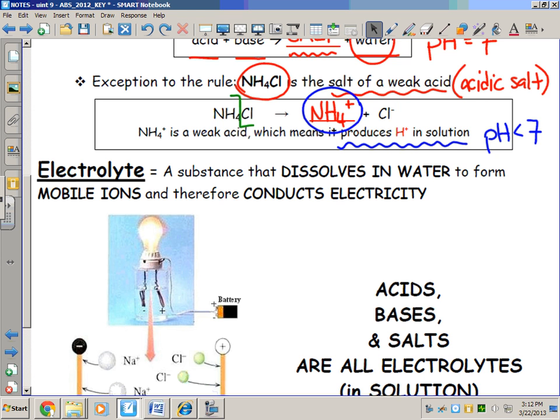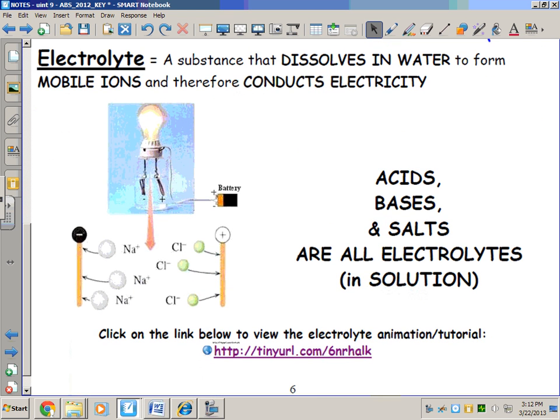Electrolytes: acids, bases, and salts all three qualify as electrolytes. That means they all dissolve in water, and when they do so they ionize.